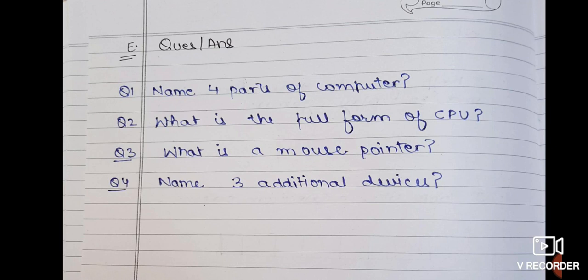Now E is question answers. So four questions are there. First is name four parts of computer. Second is what is the full form of CPU? Third is what is a mouse pointer? And fourth one is name three additional devices.